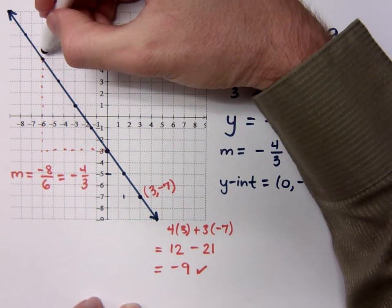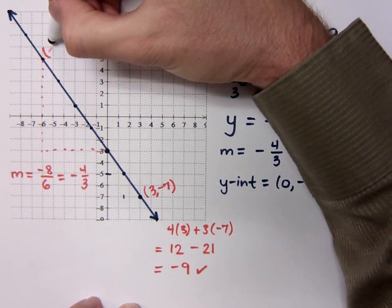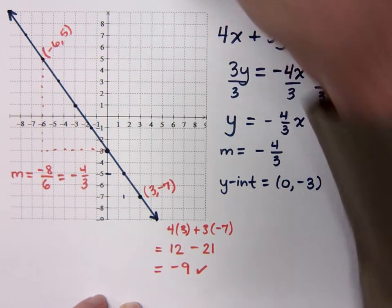What about the coordinates for this guy? What was this guy? Negative six, five. Negative six, five. So let's plug that in.